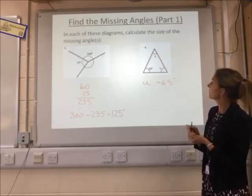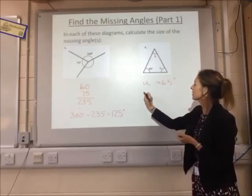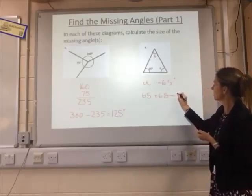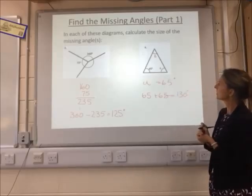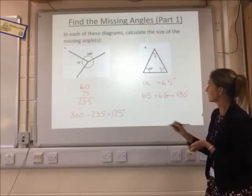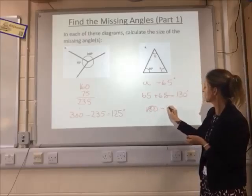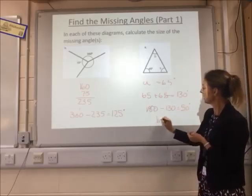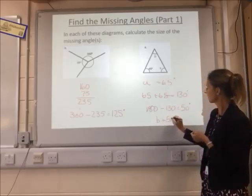So then we're going to use the fact that angles in a triangle add up to 180. We've got 65 and another 65, which gives me 130 degrees. What I've got left up to 180 is what B is. So 180 take away 130 gives me 50 degrees. So B must be 50 degrees.